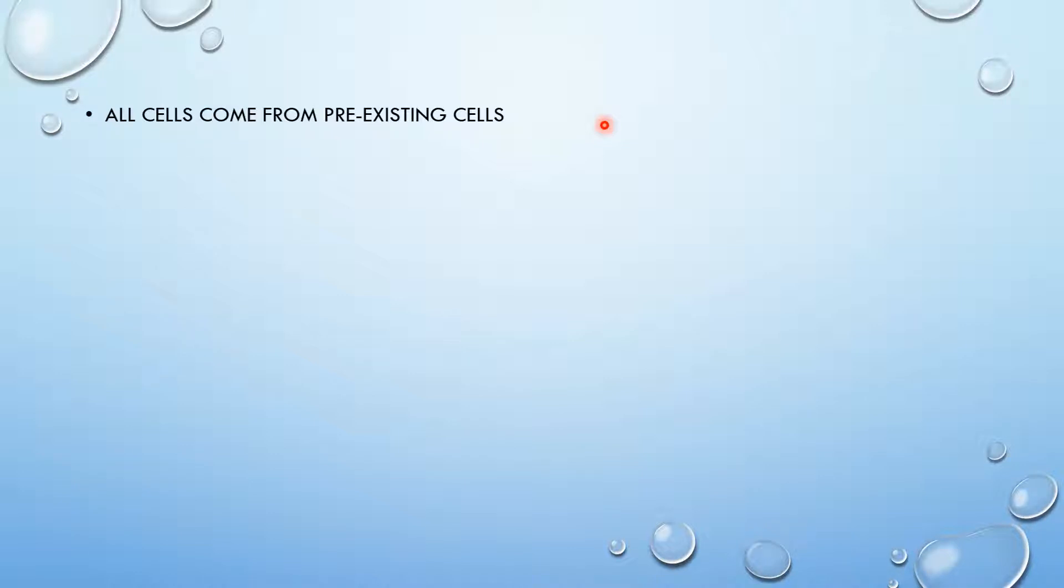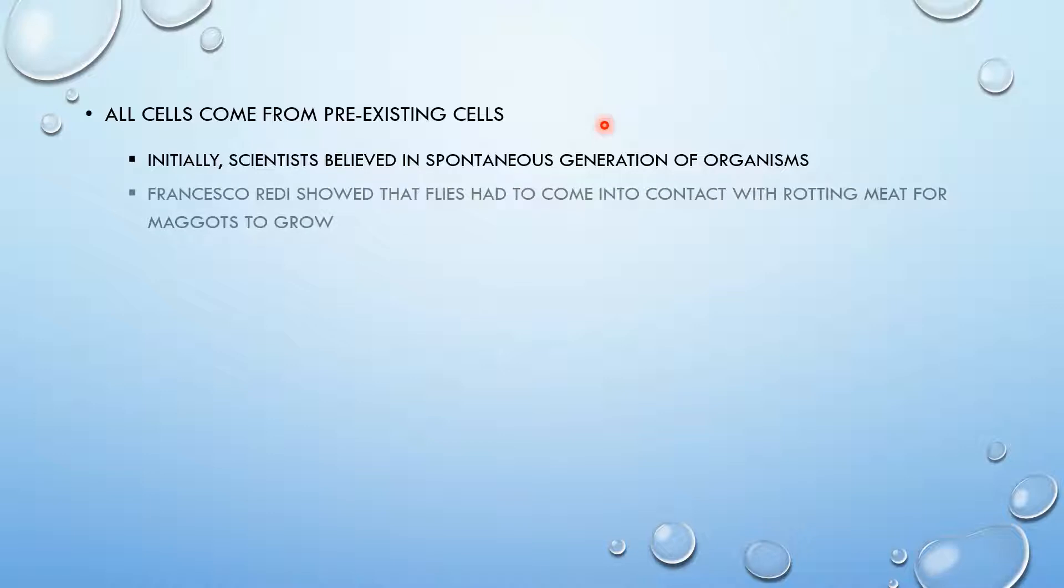Before scientists believed this, they believed in spontaneous generation, which states that organisms and cells appear out of thin air, which makes no sense but apparently did to scientists at that time. Francesco Redi showed that flies had to come into contact with rotting meat for maggots to grow. Maggots didn't just grow out of thin air, they weren't produced spontaneously. This was one of the first evidences that acted against spontaneous generation.